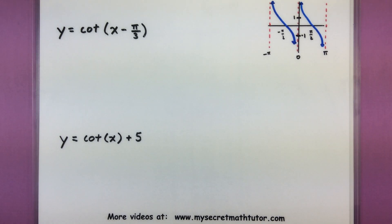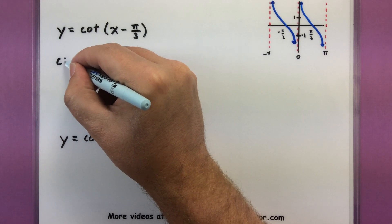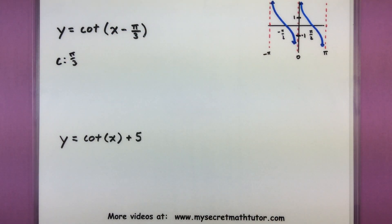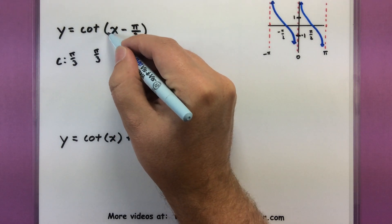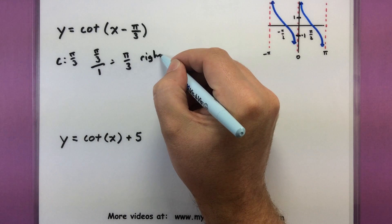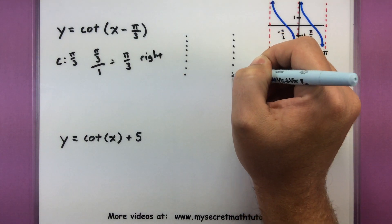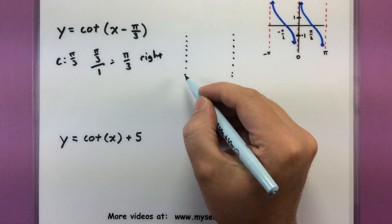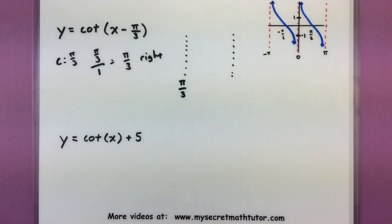Up here in the corner I have a graph of cotangent to use as a reference. This one looks like we have a value being subtracted on the inside — that would be our value of c. So we get pi divided by 3. We take that value divided by b to see exactly where things are being shifted. For our value of b, this is essentially that 1 in front of x, so we are going to shift things to the right by pi over 3. The first asymptote I want to mark out is the one that used to be at 0. Since things are being moved to the right, the new location of that asymptote is now at pi over 3. Now I want to use the period to figure out where the next one is located.